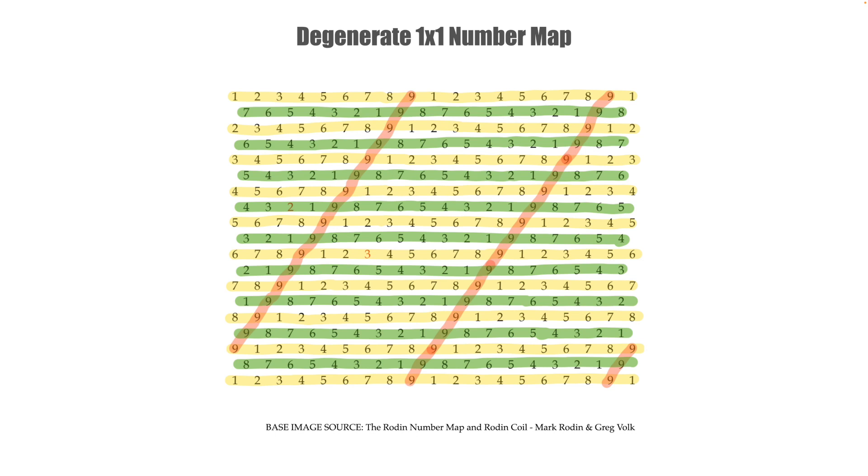Marco and Greg's paper explains that there's only three ways we can ultimately arrange the numbers so that we're going to be able to find all of the patterns, sequences and equations of VBM in a theoretically endlessly repeating 2D grid. We can find all three of these functional Rodin number map possibilities by shifting this degenerate map around a little.